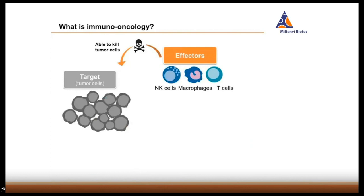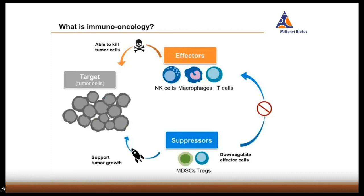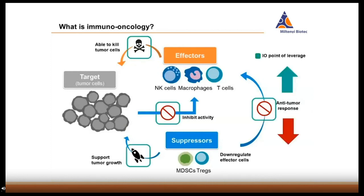This means that the immune system interacts with a tumor in several ways, either leading to an anti-tumor response or, worse, to tumor evasion. Effectors like T cells, NK cells, and macrophages are able to kill tumor cells under the right circumstances and elicit an anti-tumor response. On the other hand, suppressors like Tregs and MDSCs may down-regulate these effectors and even support tumor growth. Finally, the tumor itself might interact with the effectors, for example via checkpoint inhibition, and inhibit their activities. All these interactions are points of leverage to either attack or protect the tumor.